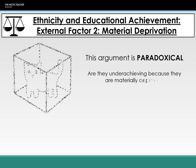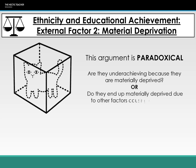However, this argument is paradoxical. We can't be sure which causes which — are ethnic minorities underachieving because they're materially deprived, or do they end up materially deprived because of other factors affecting educational achievement? For example, racism or institutional racism may lead them to be more likely to be unemployed, leading to material deprivation and a cycle of poverty. We also can't be sure whether they're materially deprived because they are ethnic minorities or because they are working class.